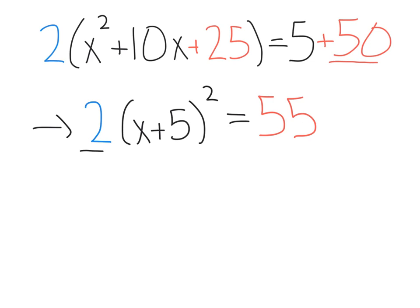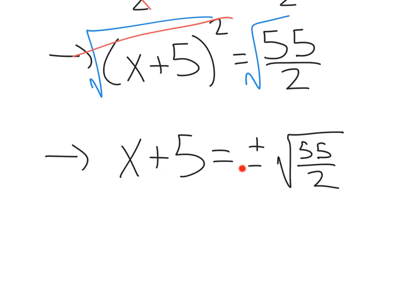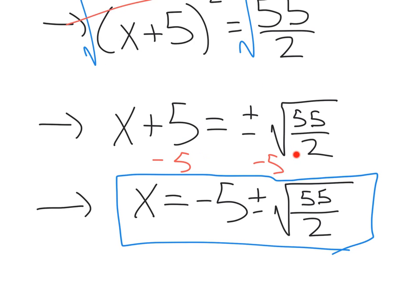Now, to continue solving, we could divide each side by 2 to isolate that squared term. Let's square root each side. That'll leave us with x plus 5 equals plus or minus square root of 55 over 2. And, subtracting the 5 over, we're going to be left with x equals negative 5 plus or minus the square root of 55 over 2.